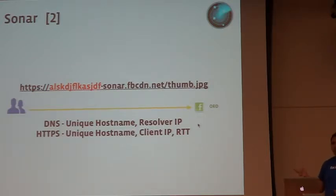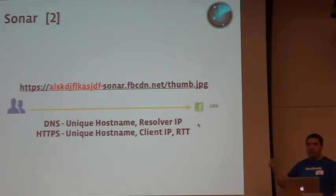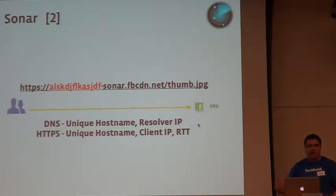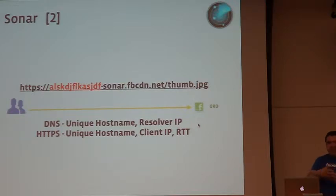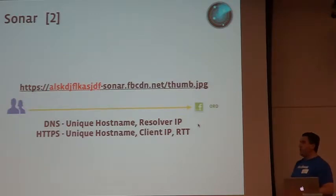There is an extension to the DNS protocol called eDNS0 that supports this. Google's 8.8.8.8 will start supporting it, and OpenDNS already does. The problem is it's very difficult for us to route people using Google DNS to the closest POP, because they're all querying the same DNS server — all we know is that the query is coming from Google. With the eDNS0 extension, Google would tell us the client's network prefix — 24 bits instead of 32 bits for privacy. That's enough for us to cross-reference with geotag data and route users to the closest POP.